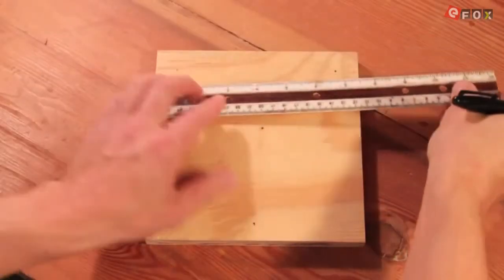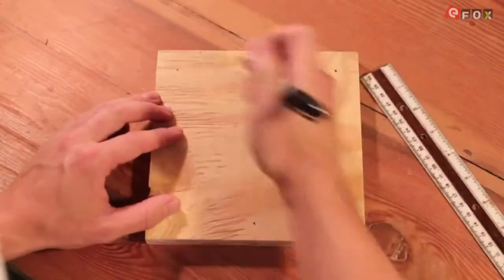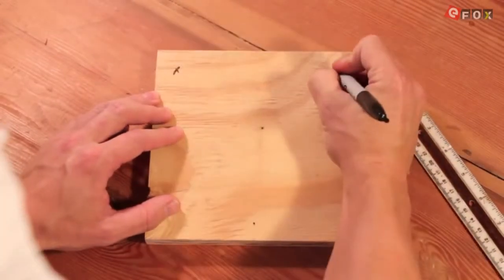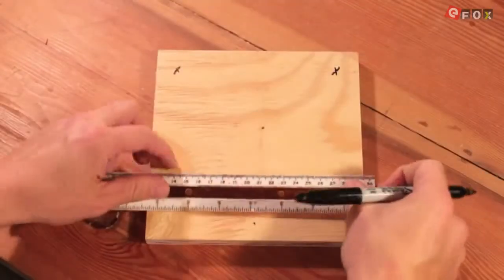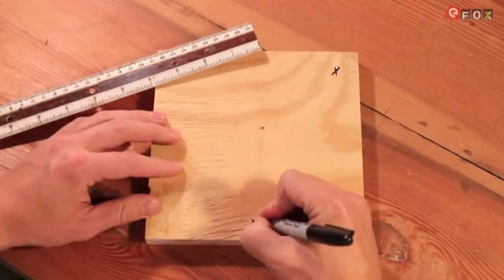Make a mark with a sharpie on the front two corners of the plywood base 3 quarters of an inch from both sides and the front edges. Make another mark centered on the board 3 quarters of an inch from the bottom.